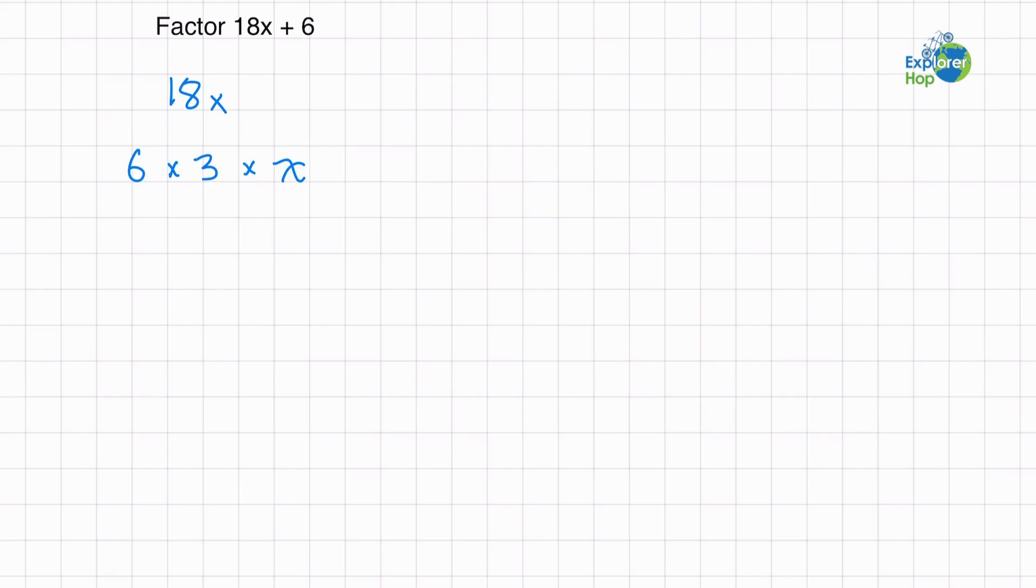6 can be broken down into 6 times 1. Now there's only one common factor with 18x and 6, so that's going to be our greatest common factor. This means 6 will be on the outside.